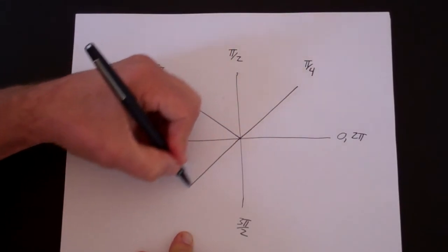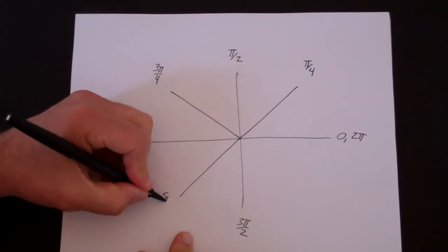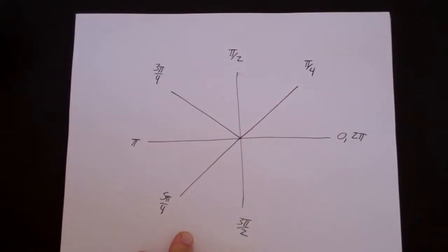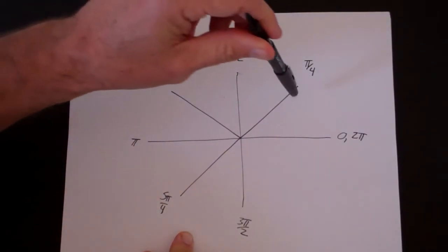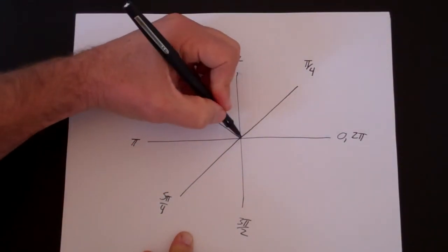Let's split this side. 1, 2, 3, 4, 5. That's 5π over 4. And 1, 2, 3, 4, 5, 6, 7. That's 7π over 4.